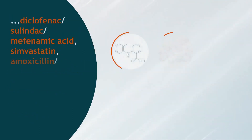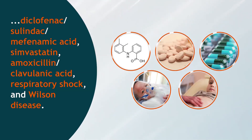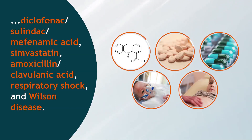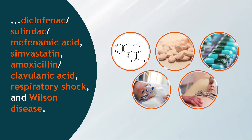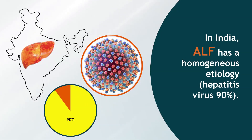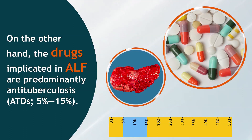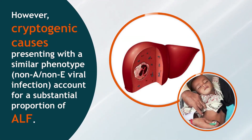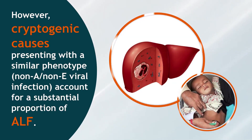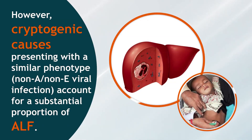Drug triggers include amiodarone, troglitazone, diclofenac, sulindac, mefenamic acid, simvastatin, amoxicillin-clavulanic acid, as well as respiratory shock and Wilson disease. In India, ALF has a homogenous etiology with hepatitis virus accounting for 90%. Drugs implicated in ALF are predominantly anti-tuberculosis drugs (ATDs) at 5–15%. However, cryptogenic causes presenting with a similar phenotype — non-A, non-E viral infection — account for a substantial proportion of ALF.